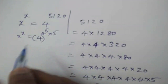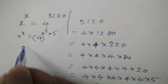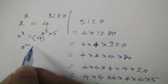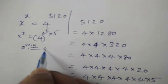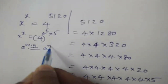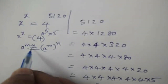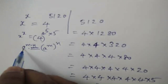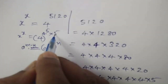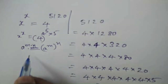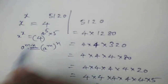Now, this is of the form a to the power of m into a to the power of m into n, which is equal to a power m whole power n. So a power m into n gives us a power m whole power n. Here, 4 to the power of 5 into 5 becomes 4 to the power of 5, whole power 5.